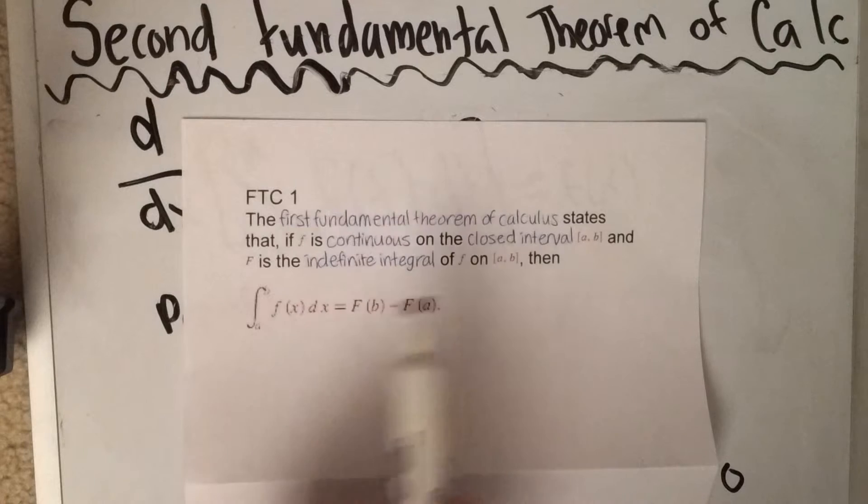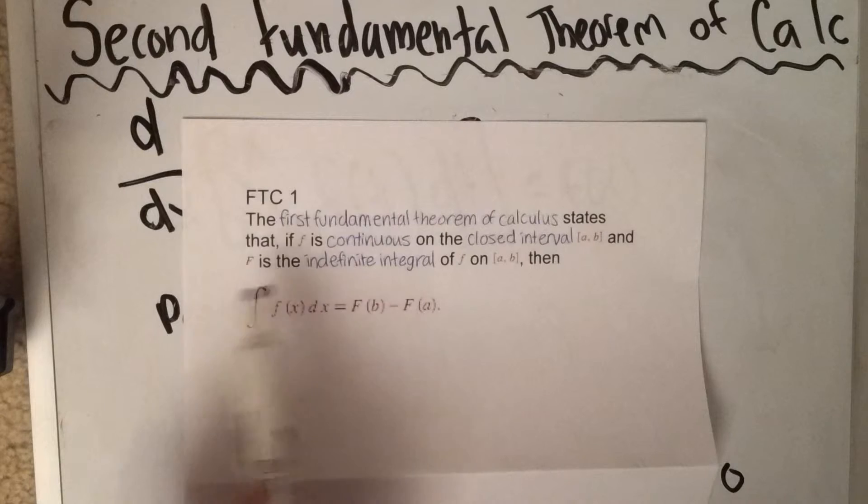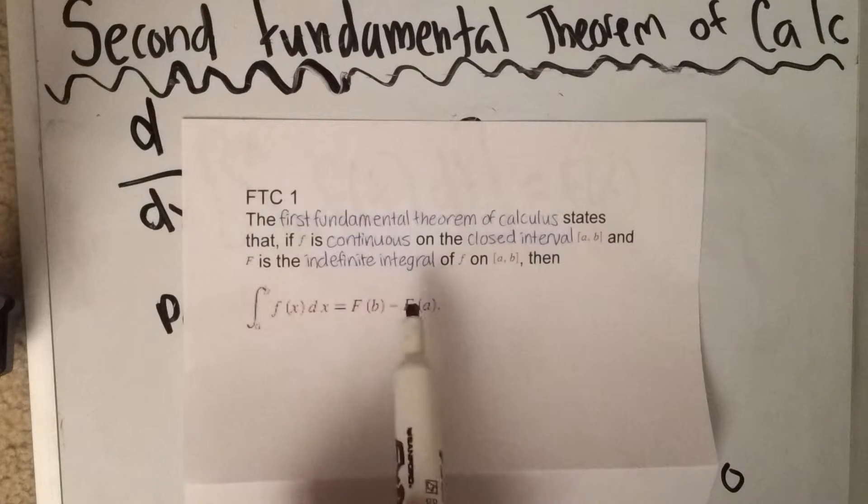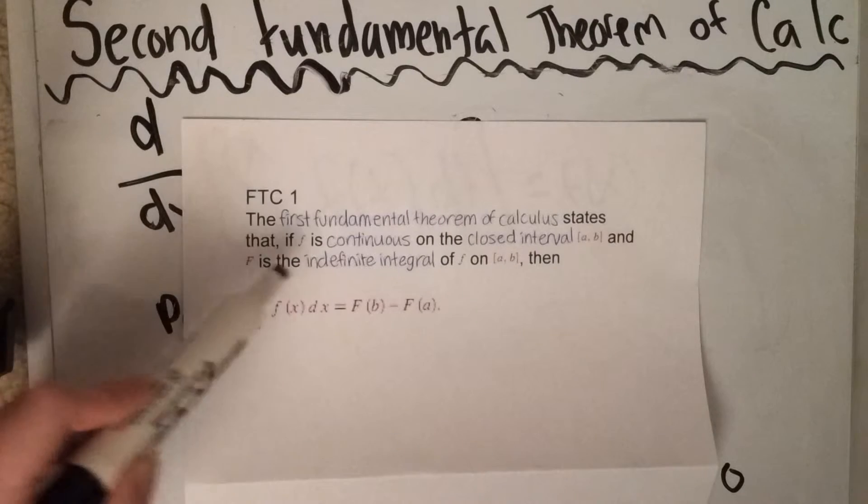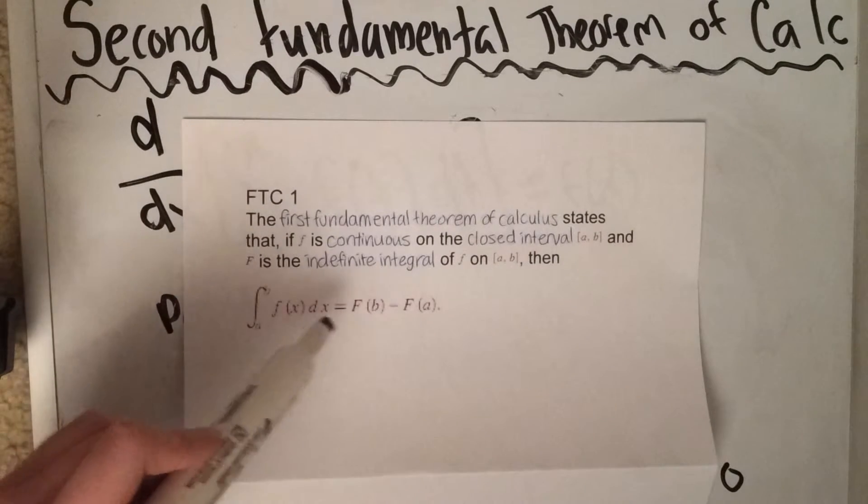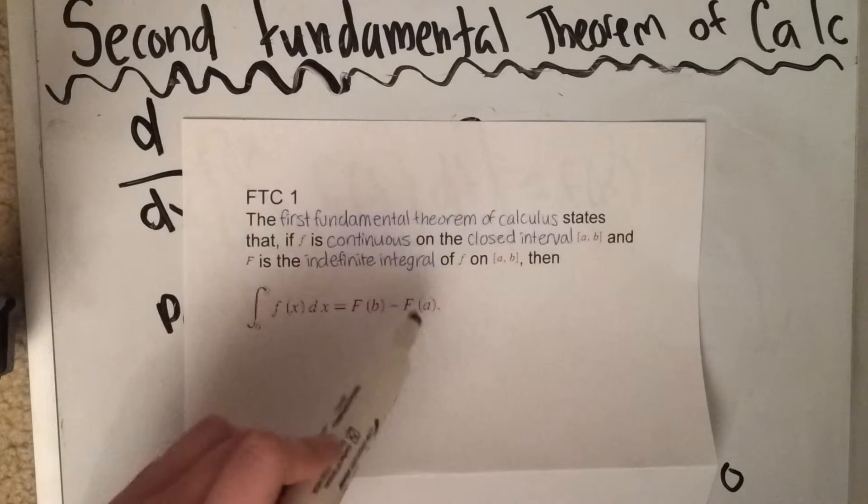states that if f is continuous on the closed interval a through b and big F is the indefinite integral of little f on a to b, then the integral from a to b of little f of x dx equals big F of b minus big F of a.